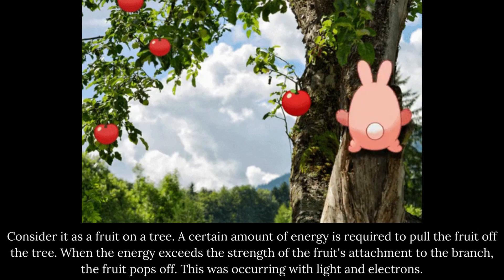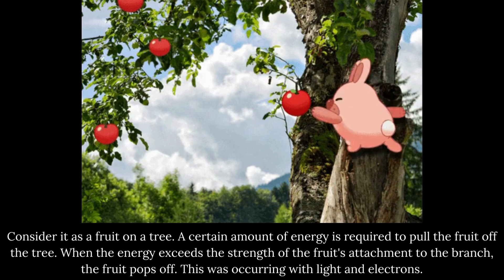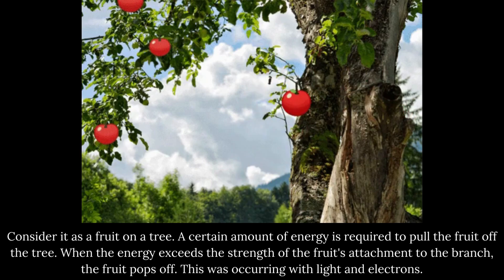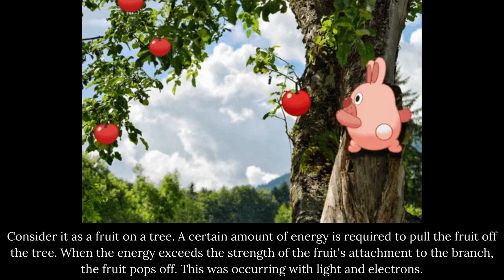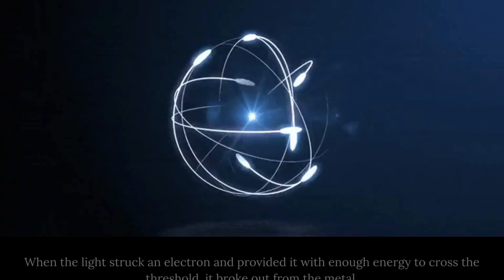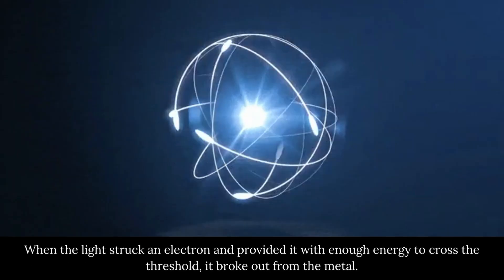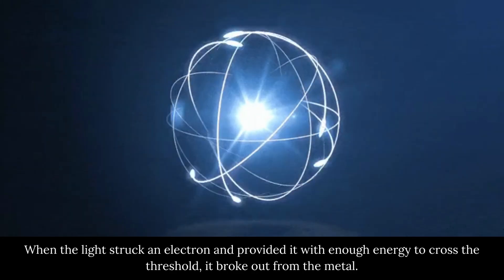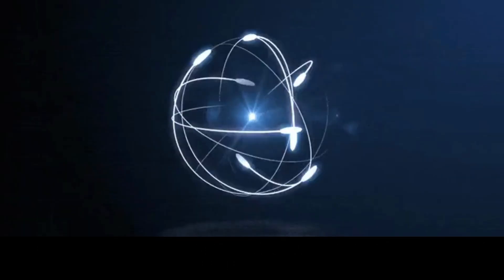Consider it as a fruit on a tree. A certain amount of energy is required to pull the fruit off the tree. When the energy exceeds the strength of the fruit's attachment to the branch, the fruit pops off. This was occurring with light and electrons. When the light struck an electron and provided it with enough energy to cross the threshold, it broke out from the metal.